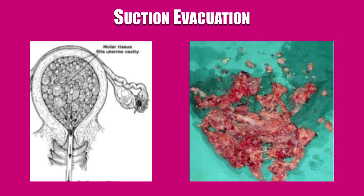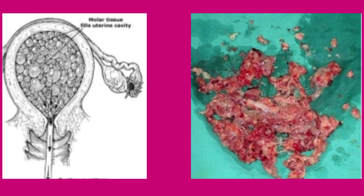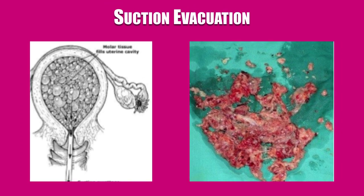Suction evacuation should be followed by a gentle sharp curettage. Because the risk of excessive bleeding increases with uterine size, two units of cross-matched blood should be immediately available when the uterus is greater than 16 weeks of gestational size. Attention to blood and crystalloid replacement decreases pulmonary complications. With judicious use of appropriate equipment, access to blood products, careful intraoperative monitoring, and early anticipation of complications, patients' outcomes improve. Patients who are Rh negative should receive Rh immunoglobulin at the time of evacuation, as the Rh D factor is expressed on the trophoblastic cells.